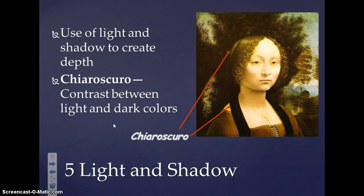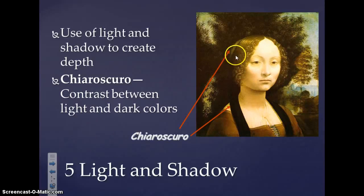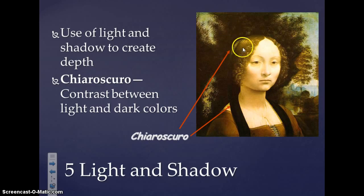Light and shadow are utilized in Renaissance paintings to create a notion of depth, making images seem more three-dimensional. Chiaroscuro is the contrast between light and dark colors. In this painting, we see the contrast between the lighter hair of the figure and the darker leaves behind her, showing her in front of the image and providing depth, along with the clothing she is wearing.